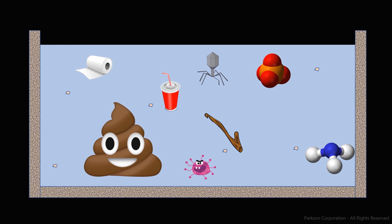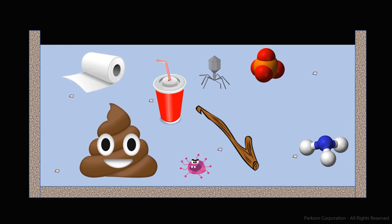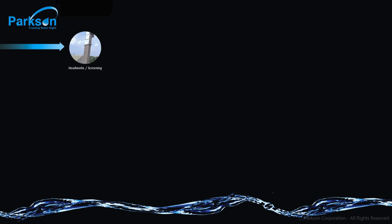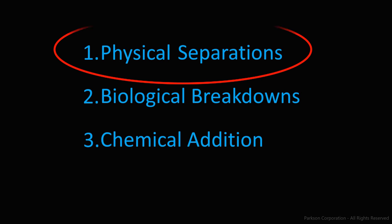So, back to the soup. The first thing we want to remove are the large inert objects. This is done in the first step of our schematic. We do this primarily utilizing physical separations.